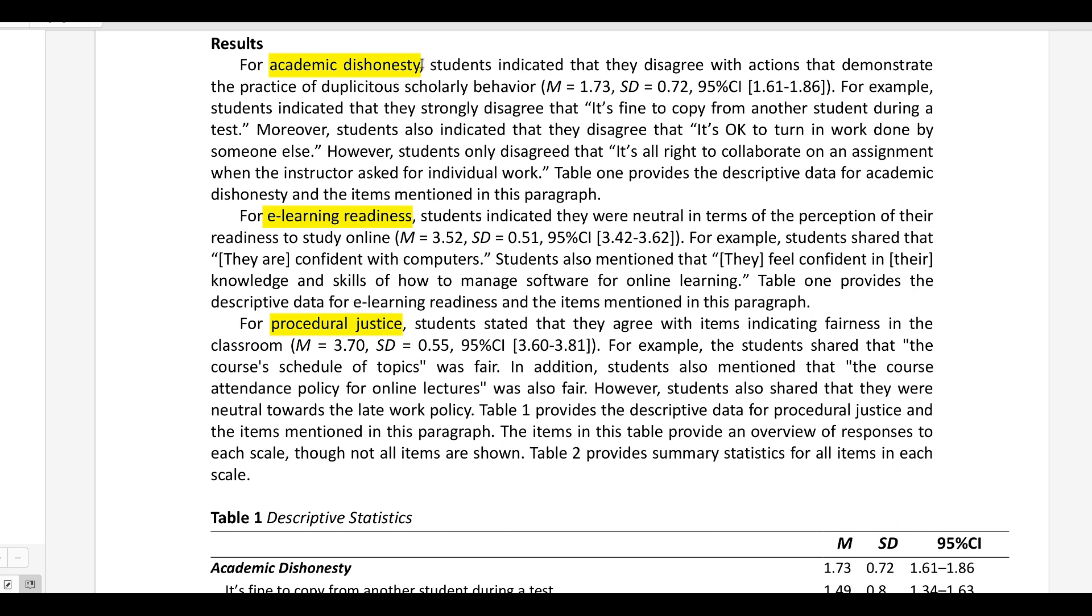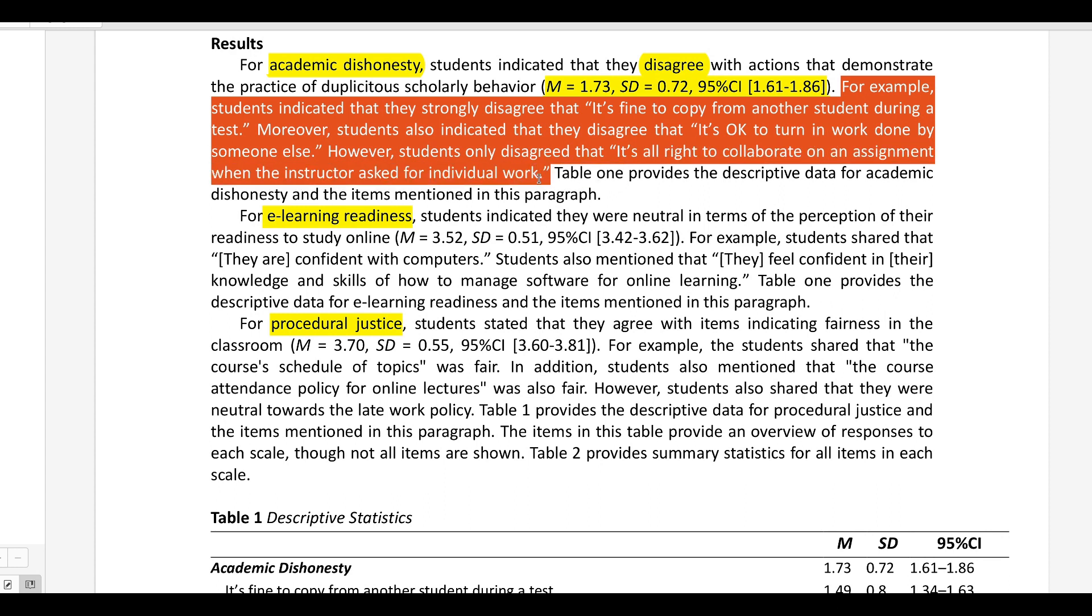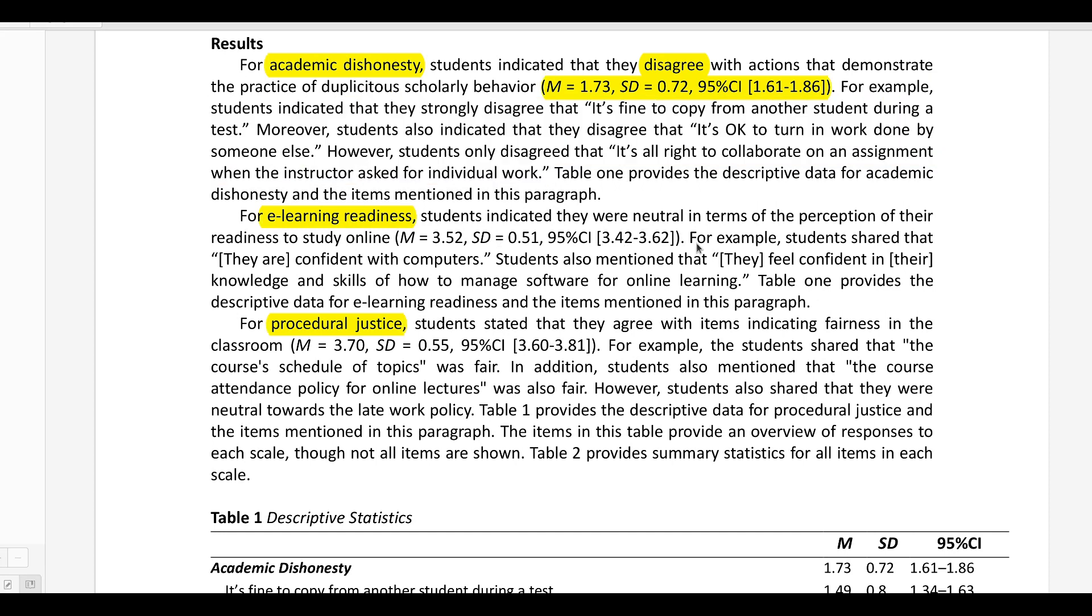And the third paragraph here is dealing with procedural justice. These are all of the different variables in my study. And so with each one of these, I just share the results. I say here, if you look at the first paragraph, students indicated that they disagree. That's the interpretation with actions that demonstrate the practice of duplicitous scholarly behavior. This is a fancy way of saying academic dishonesty right here. And so then I share the results right here. The mean standard deviation and 95% confidence interval. And I give some examples from the actual survey here statements that they responded to.